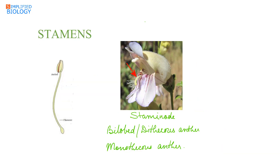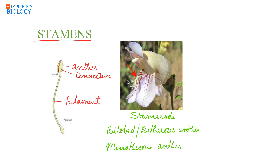The stamens, which are the modified microsporophylls, consist of anthers joined to each other by a connective and a slender stalk called the filament. The anthers, which are the microsporangium, may be bilobed or dithecous as seen in case of mustard. The anthers can also be monothecous or single-lobed, as in case of hibiscus.